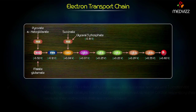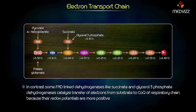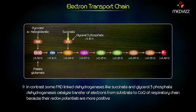In contrast, some FAD-linked dehydrogenases, like succinate and glycerol-3-phosphate dehydrogenase, catalyze the transfer of electrons from substrates to coenzyme Q of the respiratory chain because their redox potentials are more positive.